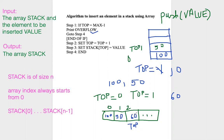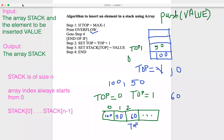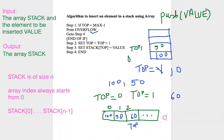The complexity of the push operation is O(1) because in the case of a stack, insertion always happens at the end, and inserting at the end of an array is always O(1).